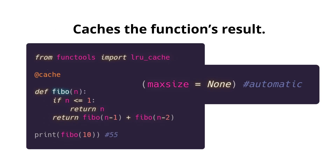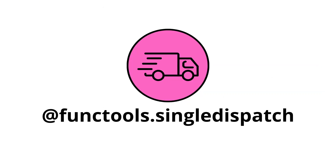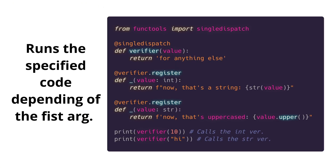Next we have @singledispatch, also requiring an import. What this does is run specific code depending on the type of the first argument. So we can modify a function's behavior depending on the type of the value. The first definition will be the fallback for anything else. If the value is not an integer or a string, we then modify this 'verifier' function with this decorator — taking the name of the function and then 'register'. If the value is an integer it will display this, and if it's a string it will display that.